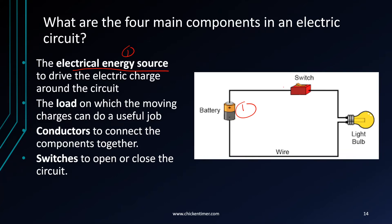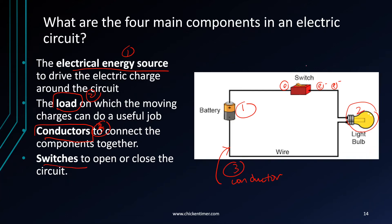In the circuit there are negative charges. The second component is the load, at which the moving charge can do a useful job. The third component is conductors — wires — which connect the components together. The fourth and final component is the switch, which opens or closes the circuit. These are the four components of an electric circuit.